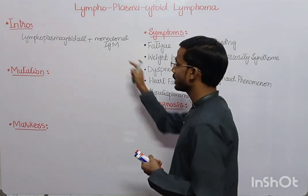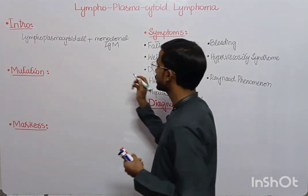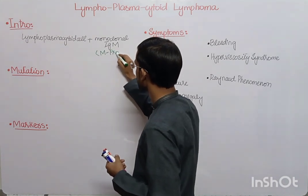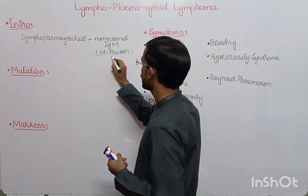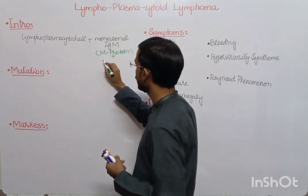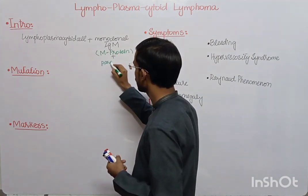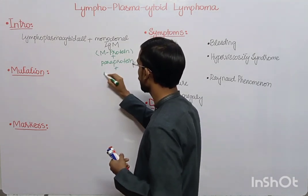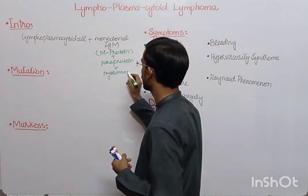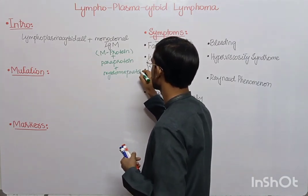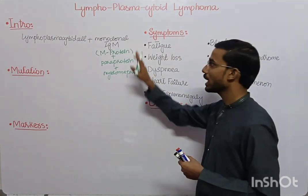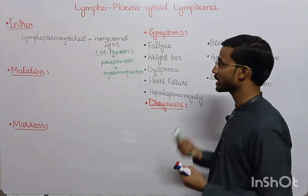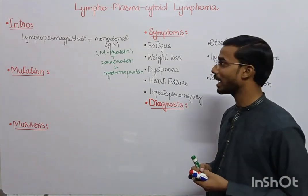The monoclonal antibody, or IgM, is also called M-protein. They are also called paraprotein or myeloma protein — they are actually the same thing, because a lot of students get confused about what is M-protein, what is paraprotein, and what is myeloma protein.